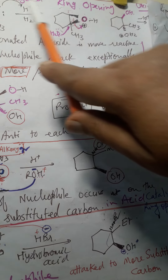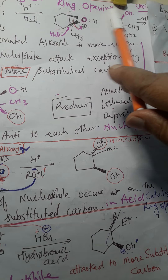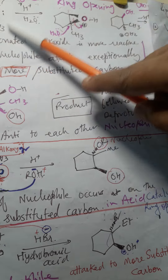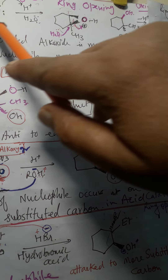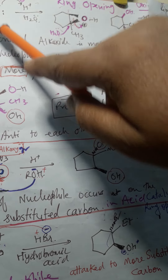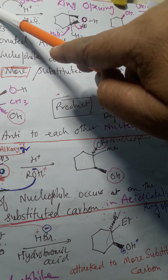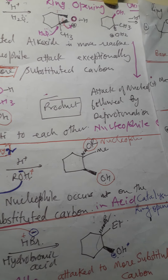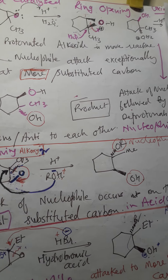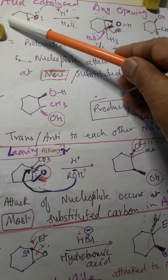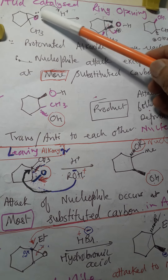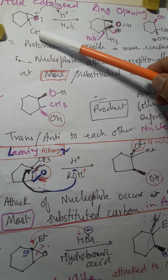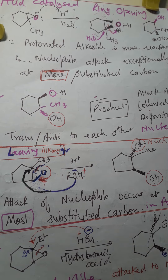Now, acid-catalyzed ring opening — what happens here? Draw this structure completely. This is cyclohexane epoxide, and there is a substituent group. This carbon is highly substituted and this one is less substituted.